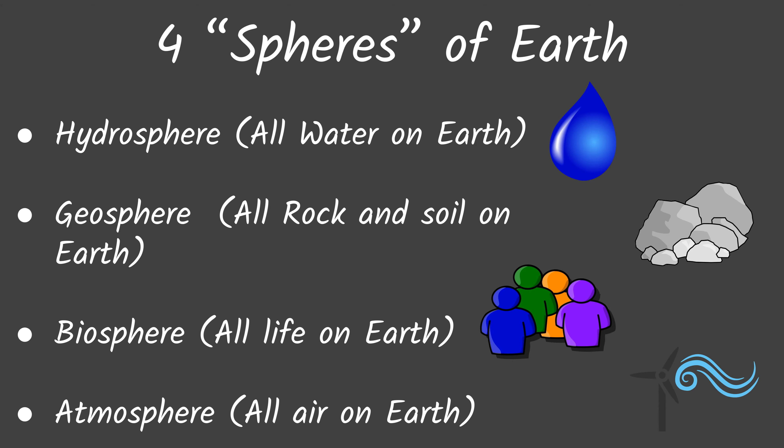Now let's take a closer look at those four spheres of Earth. The hydrosphere is all of the water on Earth, and that includes things that are dissolved into the water. The geosphere is all of the rock and soil on Earth. The biosphere is all life on Earth. And the atmosphere is all of the air on Earth. Often these energy sources or materials like atoms or elements are moving between those four different spheres on Earth.